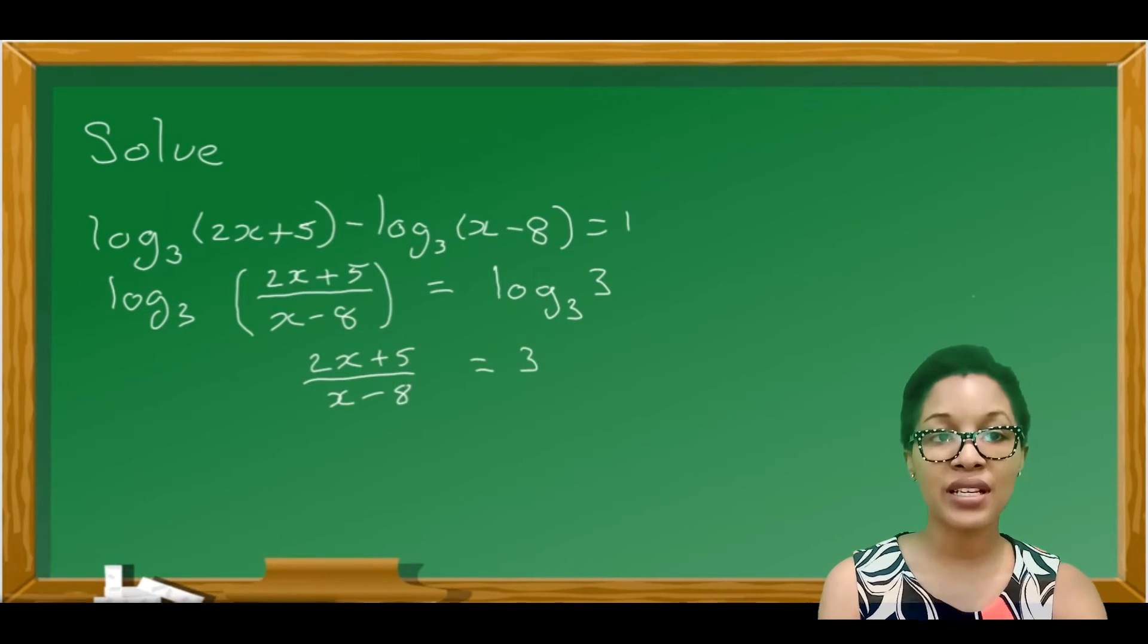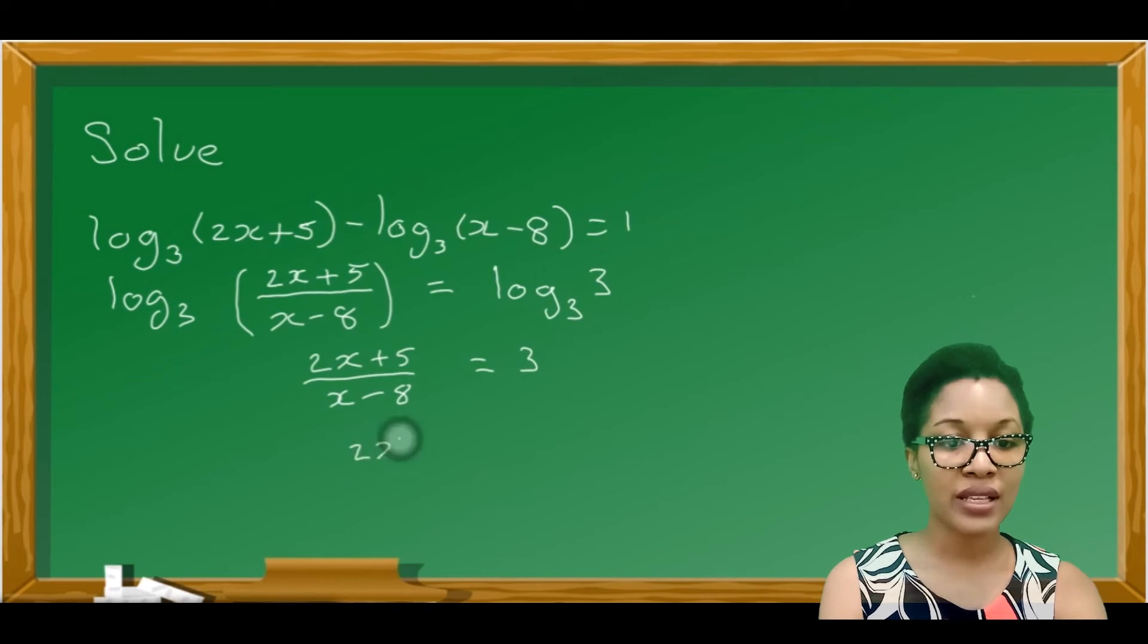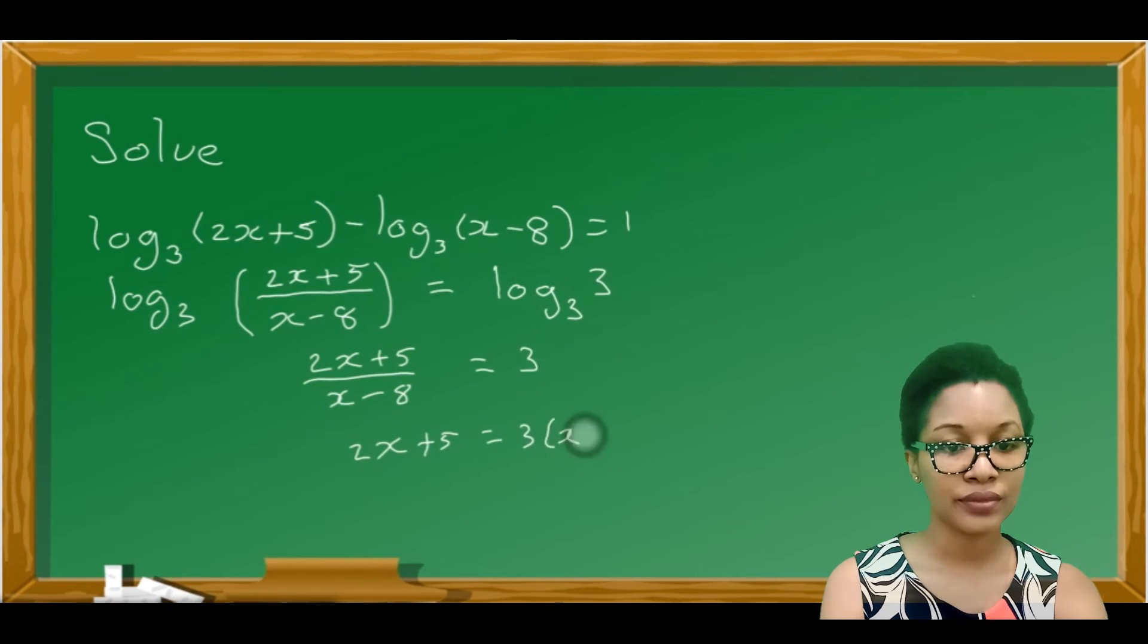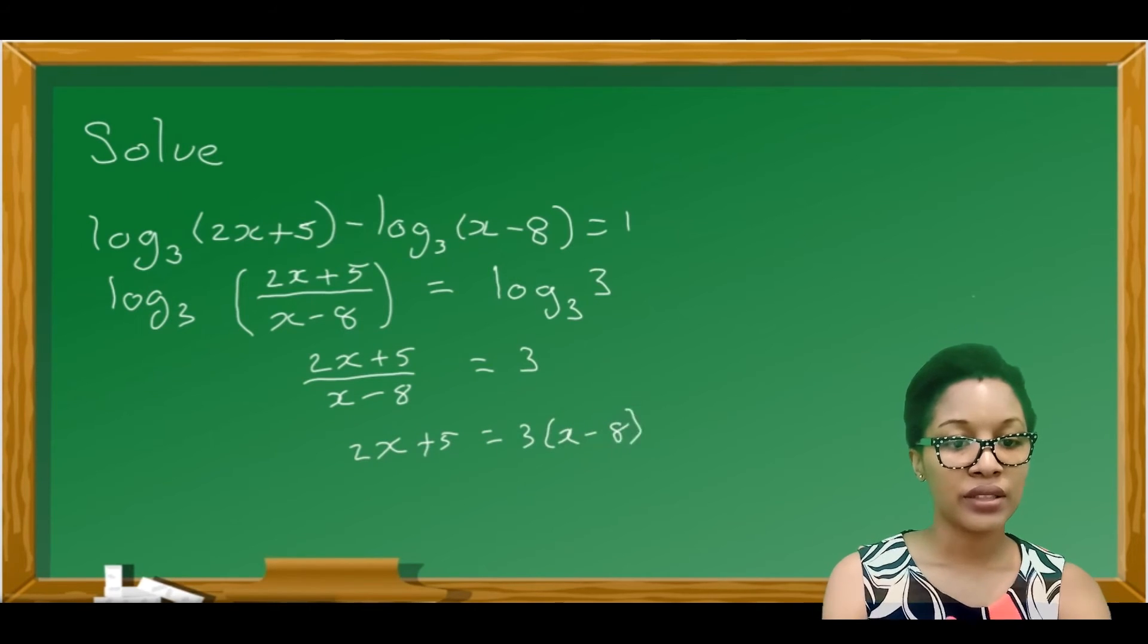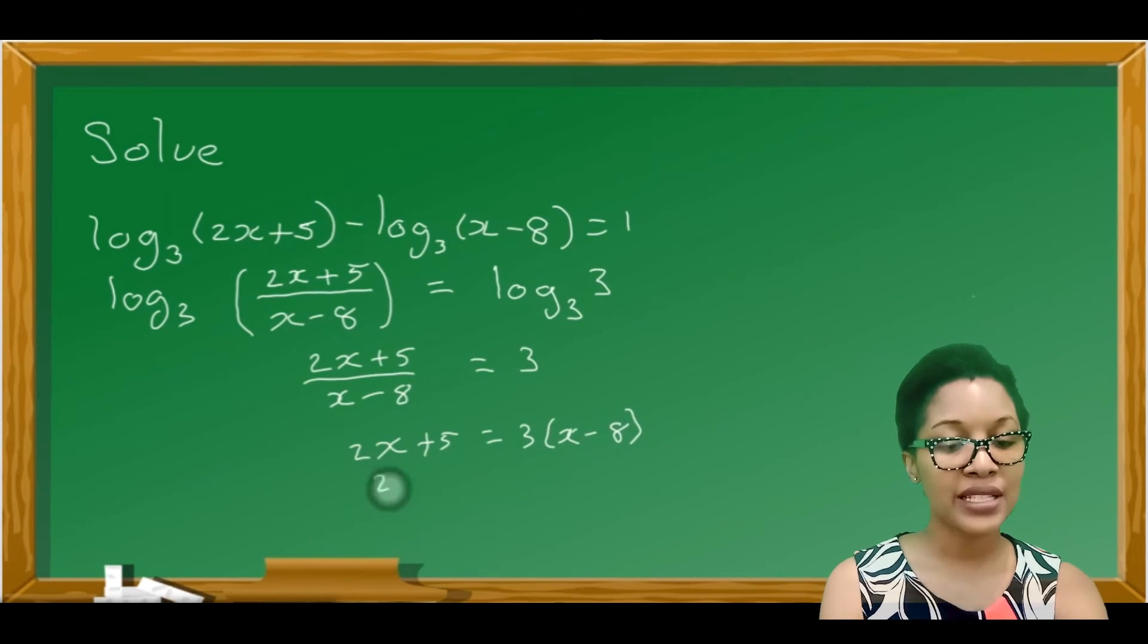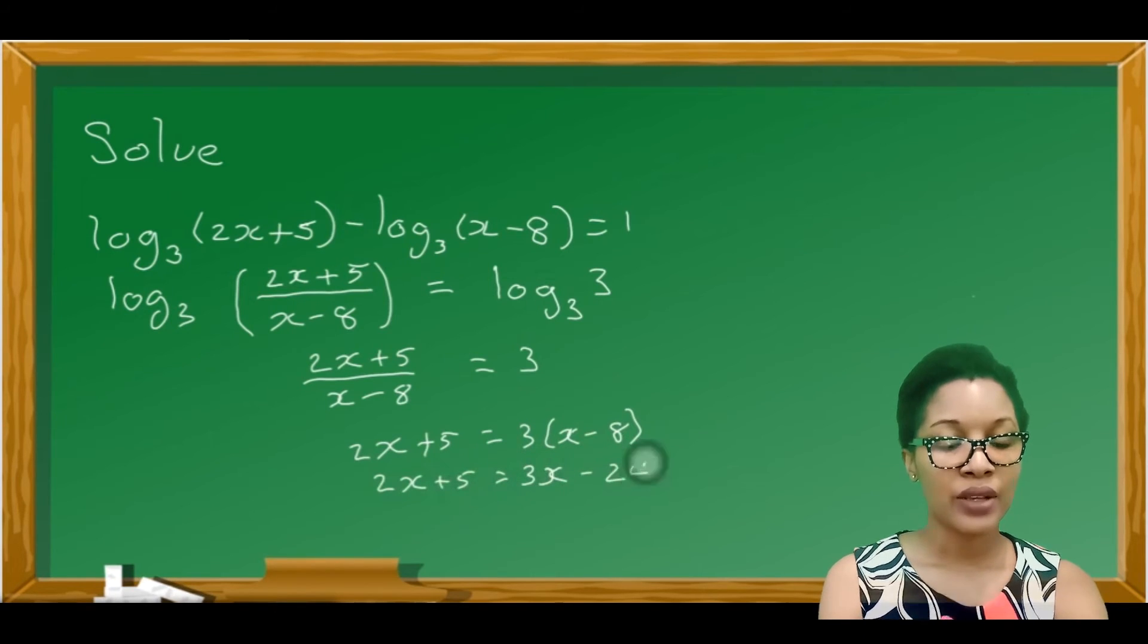Now this is a normal equation and we can solve this. Let's multiply 3 by x minus 8. You'll get 2x plus 5 is equal to 3x minus 24.